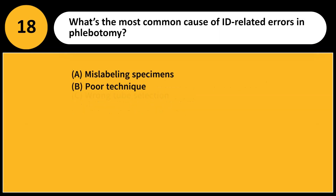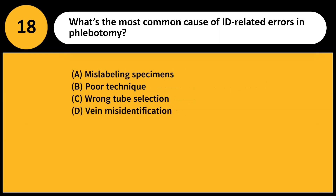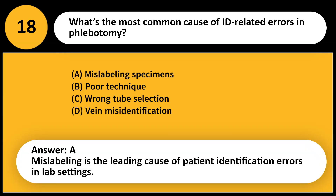What's the most common cause of ID-related errors in phlebotomy? A. Mislabeling specimens. B. Poor technique. C. Wrong tube selection. D. Vein misidentification. Answer: A. Mislabeling is the leading cause of patient identification errors in lab settings.